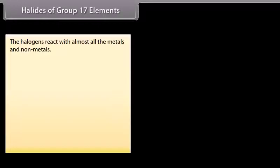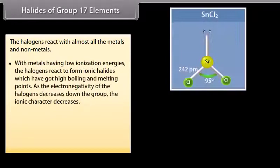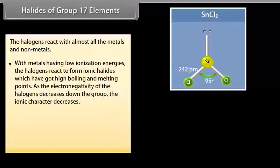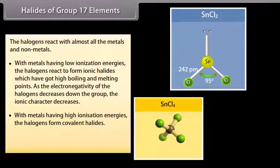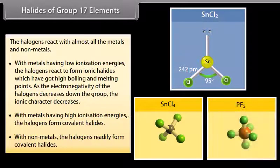Halides: Halogens react with almost all metals and non-metals. With metals having low ionization energies, halogens form ionic halides with high boiling and melting points; as electronegativity decreases down the group, ionic character decreases (e.g., SnCl₂ and PbCl₂). With metals having high ionization energies, covalent halides are formed (e.g., SnCl₄ and PbCl₄). With non-metals, halogens readily form covalent halides (e.g., PF₅ and PCl₃).